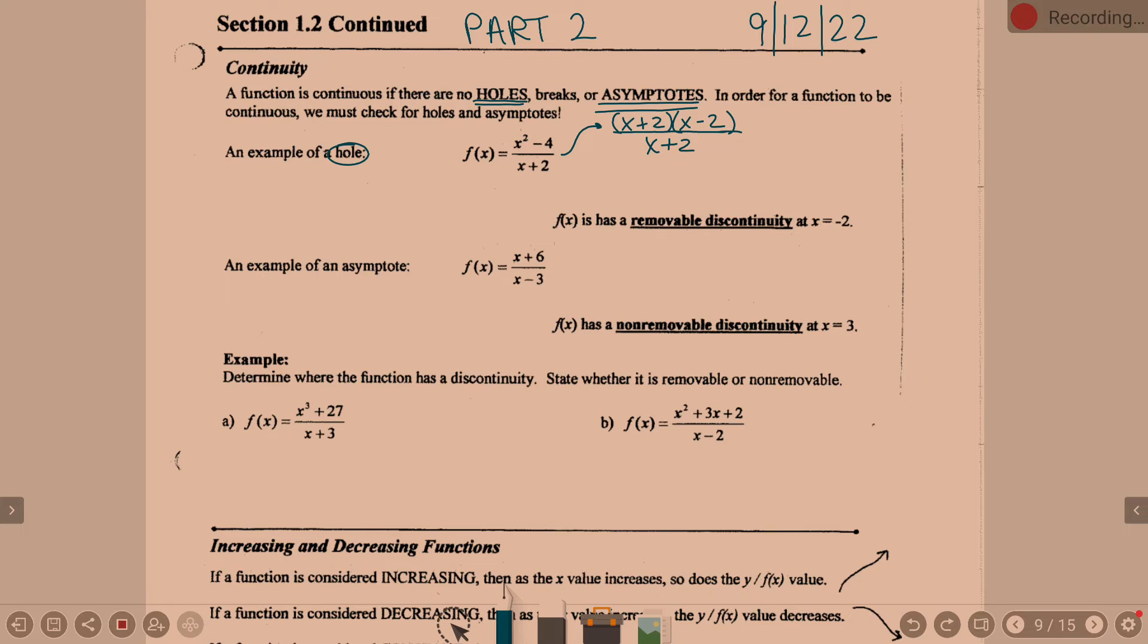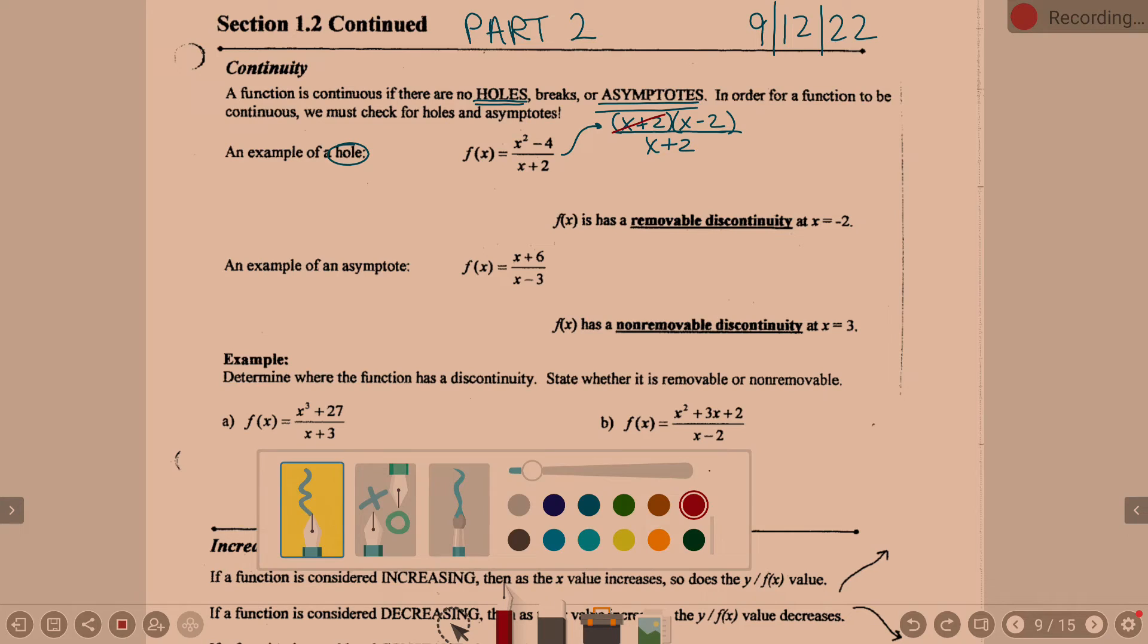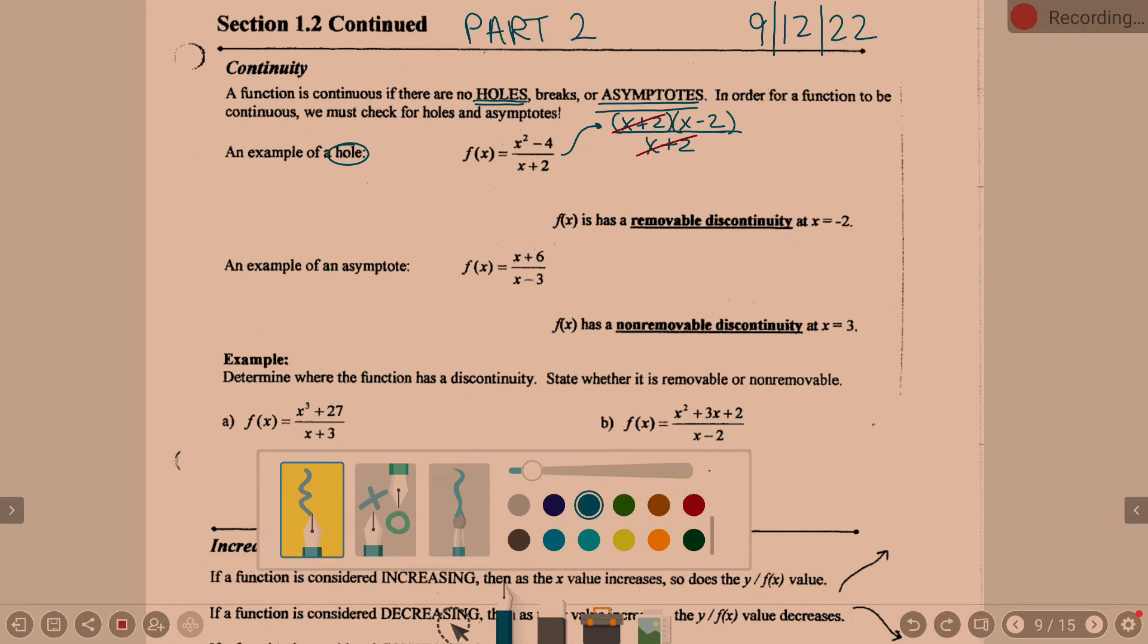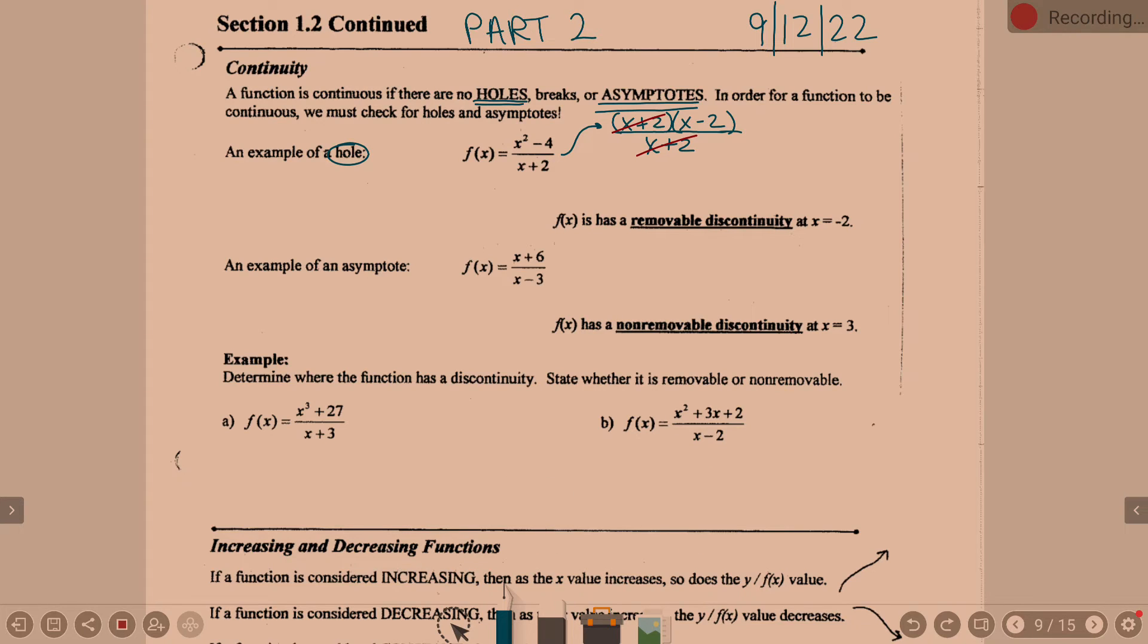And my denominator was already x plus 2. Hmm, what do you notice here? Here's an x plus 2 and an x plus 2. So when we clean this up, it actually, this is why I said your equation is a line. Because you're actually really just graphing the line y equals x minus 2.